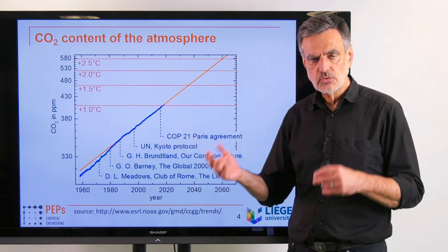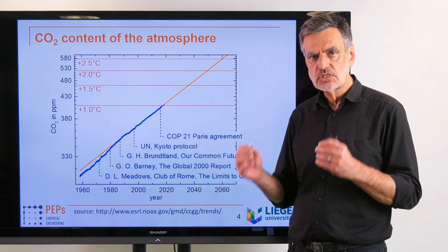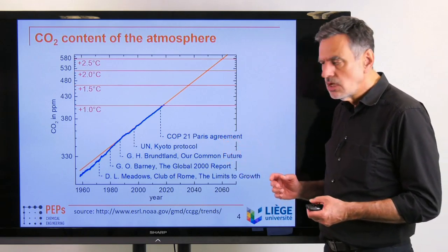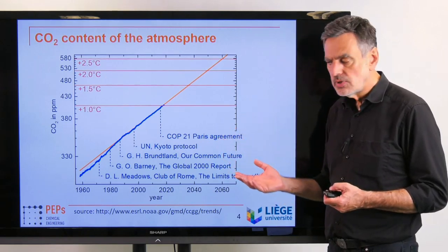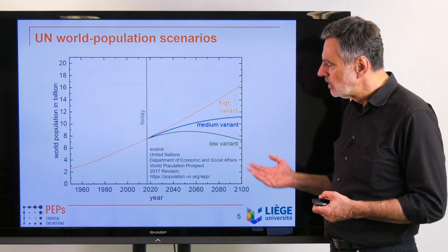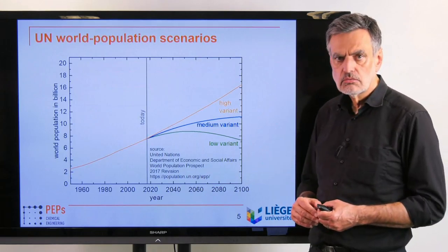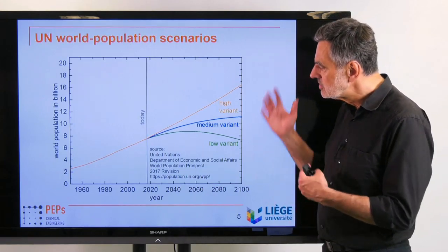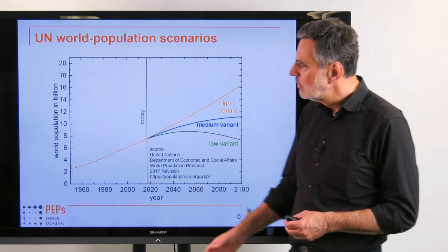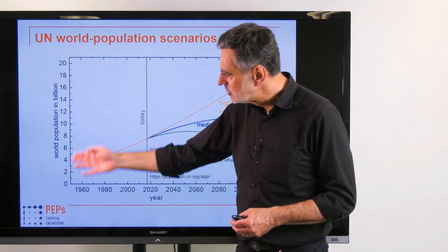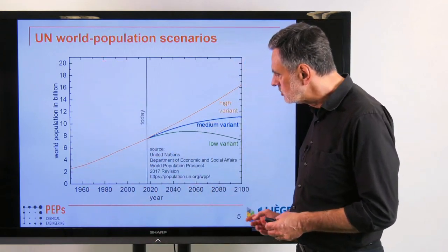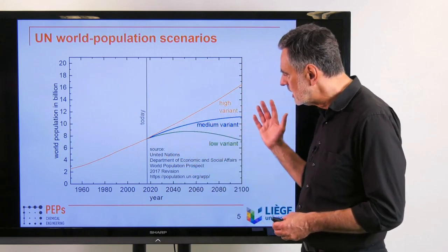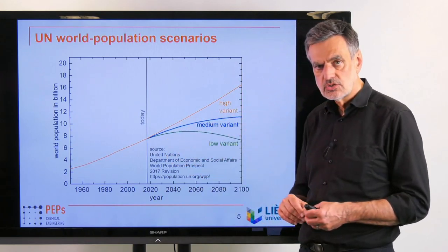If we continue that exponential growth, the climate goals agreed internationally with the Paris Agreement in 2015 — 2 degrees or 1.5 degrees centigrade — will be reached quite soon, within two to three decades.